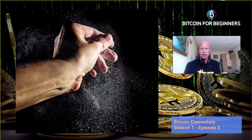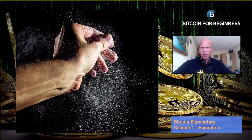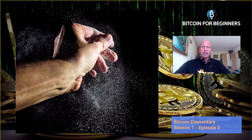A dusting attack is carried out by cybercriminals in the crypto space to reveal the identity of a person or company. After getting hold of an individual's identity, they can do a couple of things including blackmail, selling the stolen identity, or initiating some form of social engineering. Want to learn more about dusting attacks and how to protect your Bitcoin against it? Just sit back, relax and keep on watching.